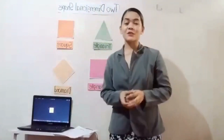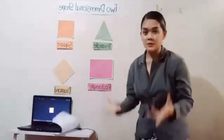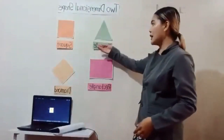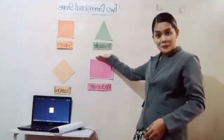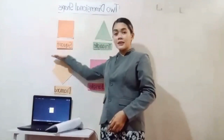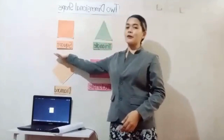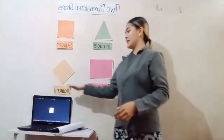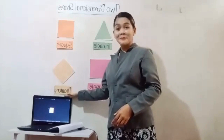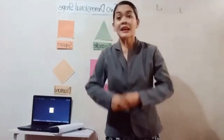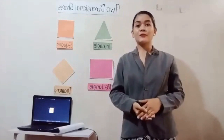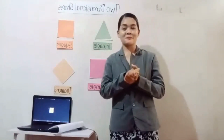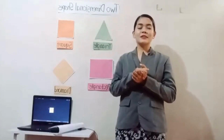That is our lesson for today — it's all about shapes. Let's have a quick review. This is a triangle. This is a square. This is a rectangle. And this is a diamond. Very good, very good!